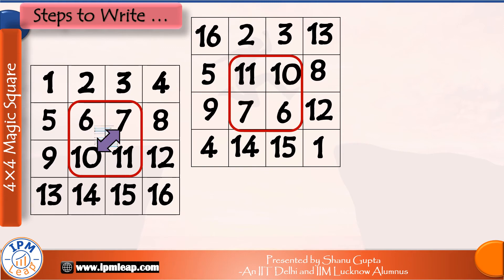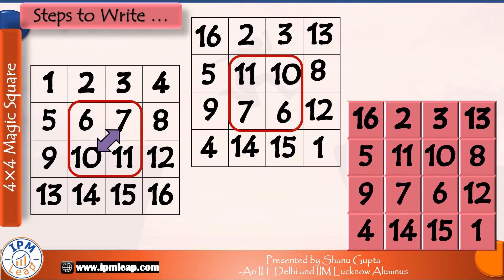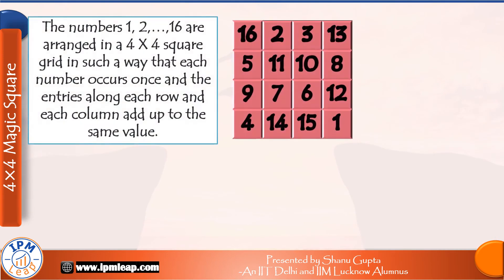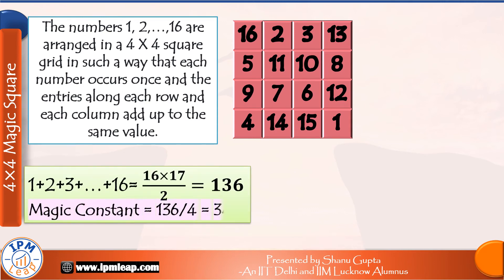That completes our magic square. This is what our 4x4 magic square looks like. Just like the 3x3 square, in a 4x4 square each number from 1 to 16 occurs once, and the entries along each row and each column add up to the same value — the magic constant. The sum of numbers 1 to 16 is 136, divided equally over 4 rows, so each row sum will be 136 divided by 4, which is equal to 34. Our magic constant is 34 for a 4x4 magic square.